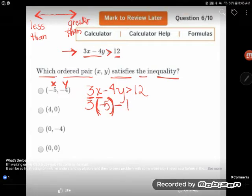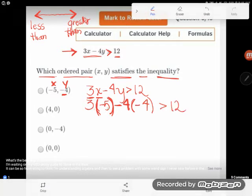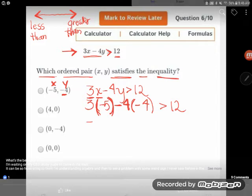OK, minus 4 times. And the y value I'm testing is negative 4. So I'll plug a negative 4 in there. And I want to see if that whole thing will be greater than 12. Let's take a look. Well, 3 times negative 5 is negative 15.